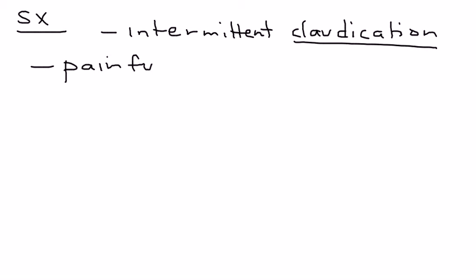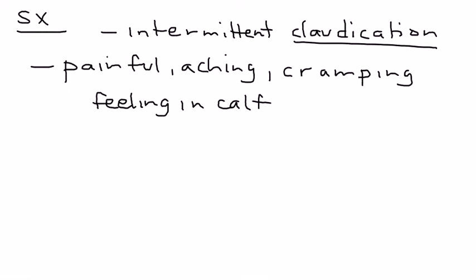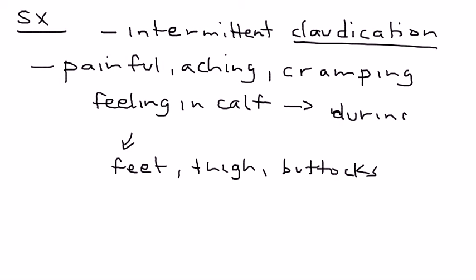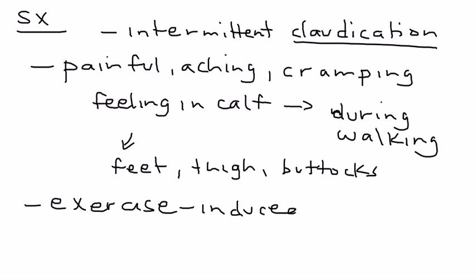It's often described as an ache or a cramp, and most commonly it's felt in the calf, although it can also be in the feet or in the thigh or in the buttocks. This happens most commonly when the person is exercising, during walking for example. This is the hallmark: you have this exercise-induced reversible ischemia. When the person stops, the pain goes away.